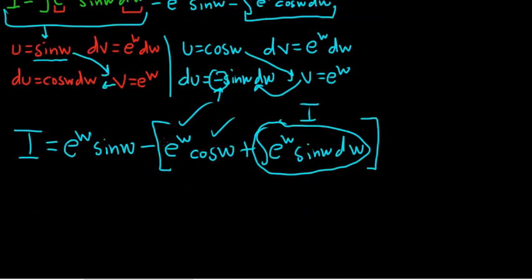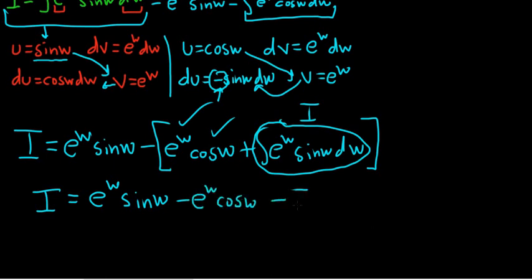No matter how many times I do problems like this, every time I see that i again, it's like, oh. It's a good feeling. So i is equal to e to the w sine w. Gotta love integration. Minus e to the w cosine w minus i. There's the i.